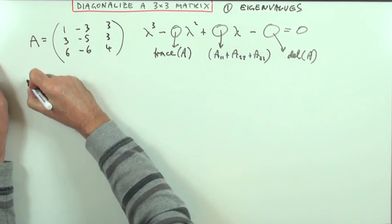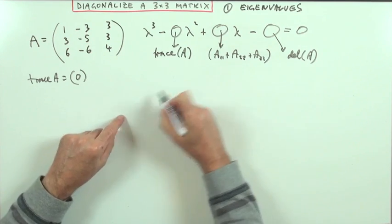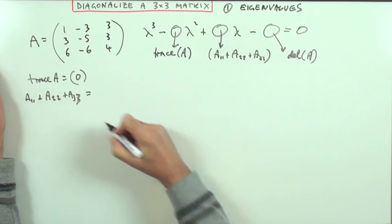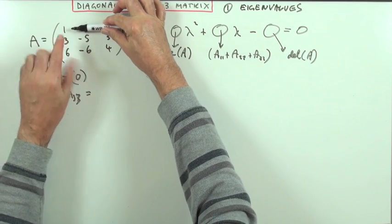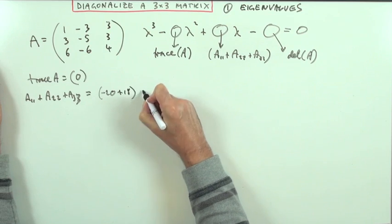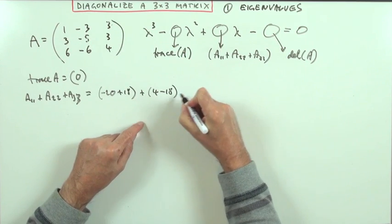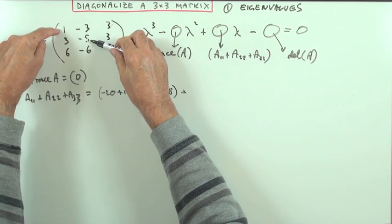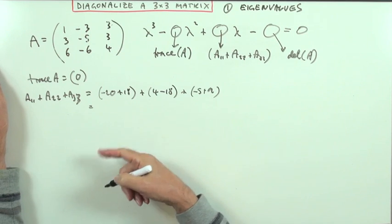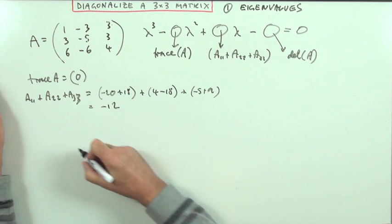What's the trace of A? You just add up the diagonal entries, and it comes to zero. For A₁₁ plus A₂₂ plus A₃₃: A₁₁ is negative 20 plus 18. A₂₂ is 4 take away 18. A₃₃ is negative 5 plus 9. Tidying that up: we get negative 2, and negative 14, so negative 16, and then a negative 16 and a 4 makes negative 12.